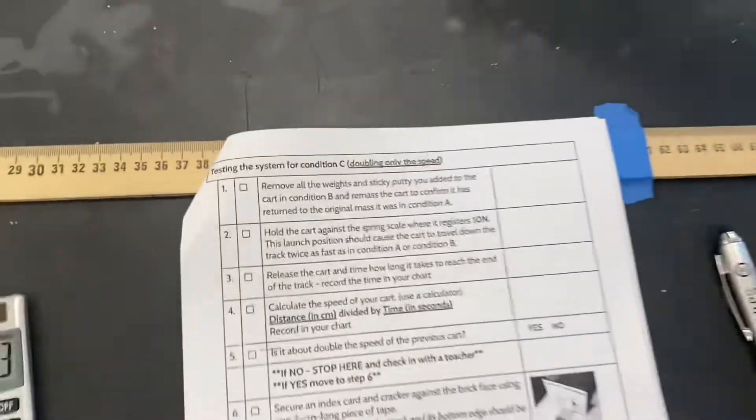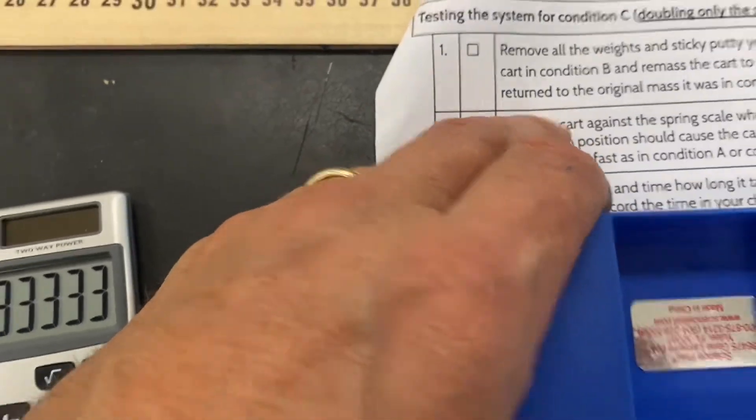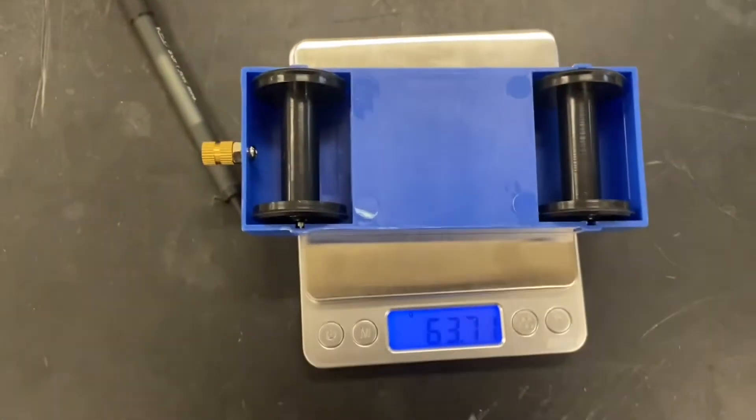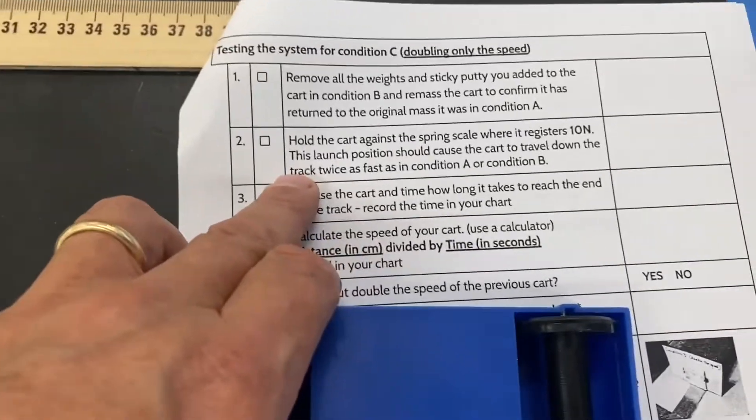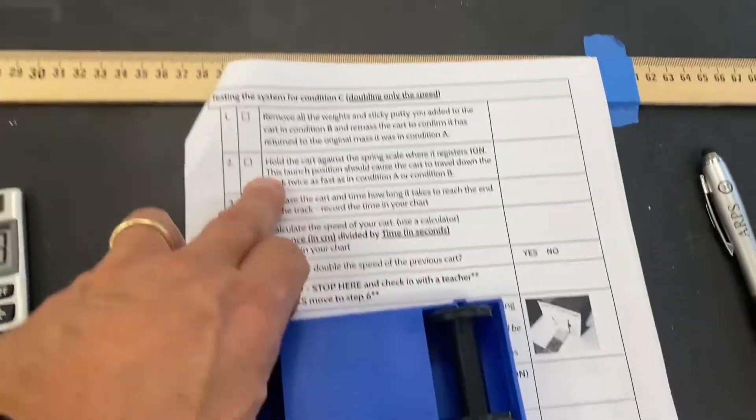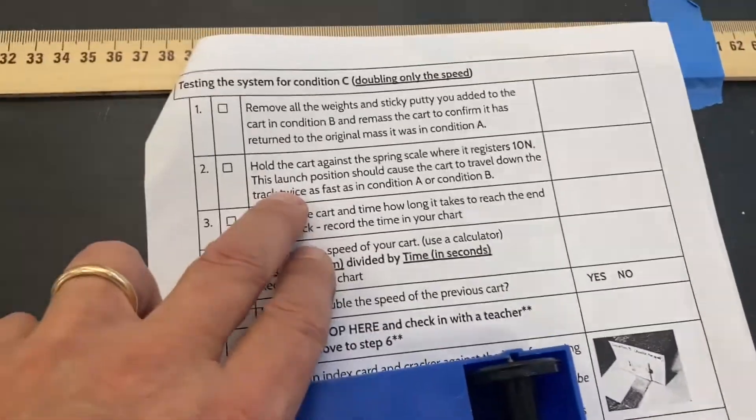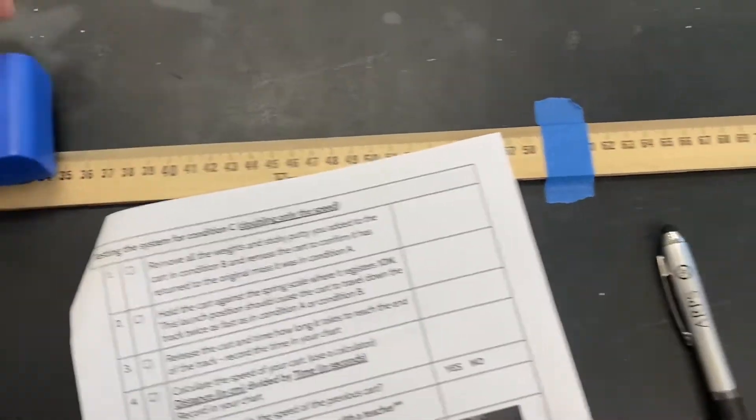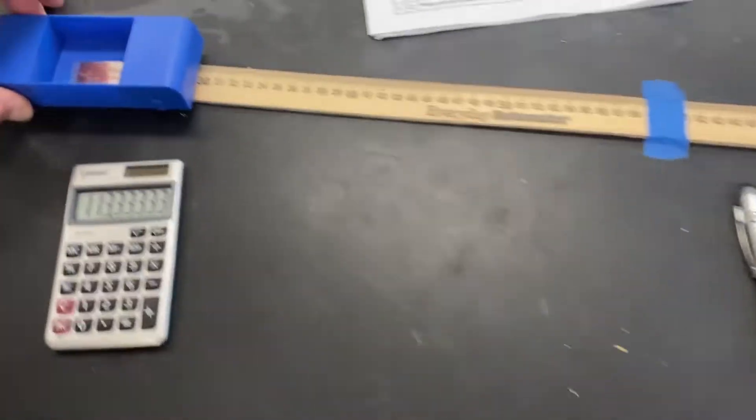So now we'll take that cracker off to the side for our comparison with the next condition. All right, we're going to throw a new piece of paper on there. We're going to do this again for the last step, which is condition C doubling the speed. We're going to remove all the weights, which we did confirm that it's the original mass. So here we go. It's back at 64 or 63.7 round up to 64. Now we're going to hold the cart. I think actually we're going to time this one. We're going to hold the cart against the spring scale, register 10 newtons.